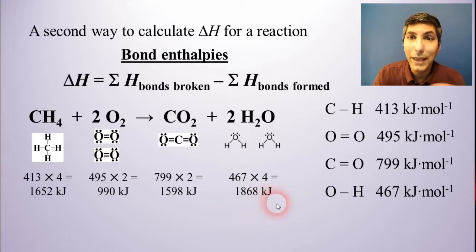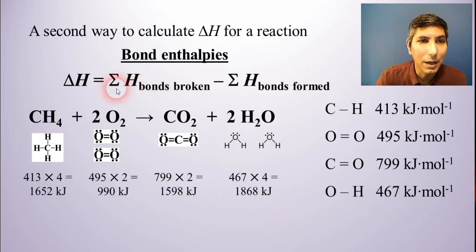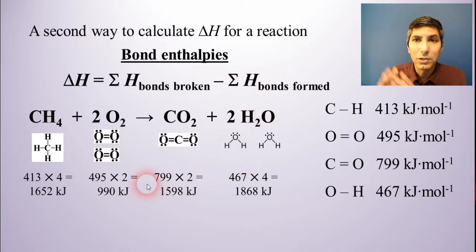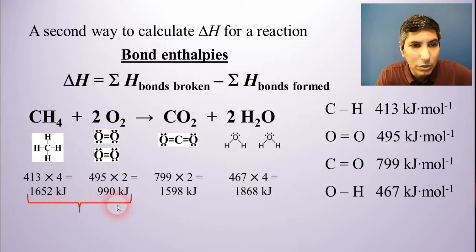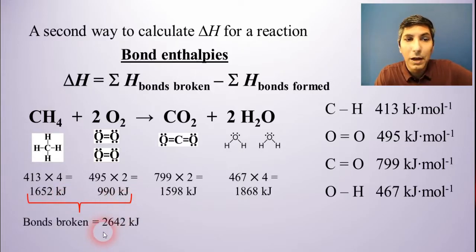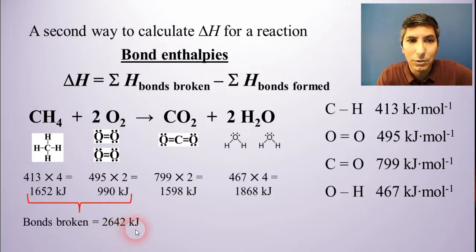Now, with that done, all we have to do is take the sum of the bonds that are broken minus the sum of the bonds that are formed. Now, the bonds that are broken are the ones on the left side of this equation. So that would be all these on the reactant side. So when I add those together, the 1,652 plus the 990, I get that the bonds broken are 2,642 kilojoules.